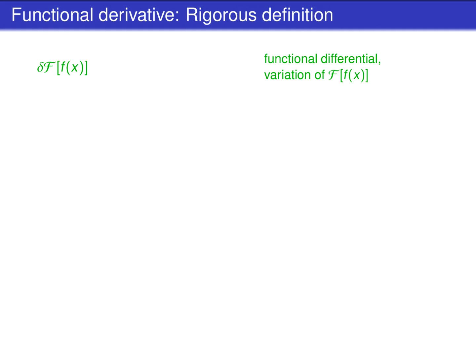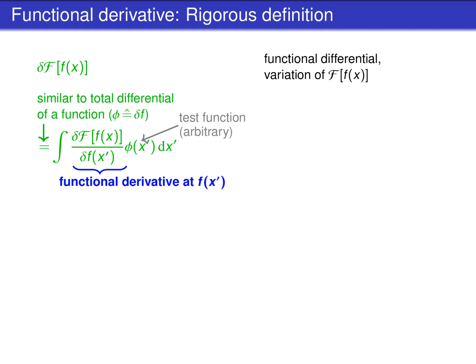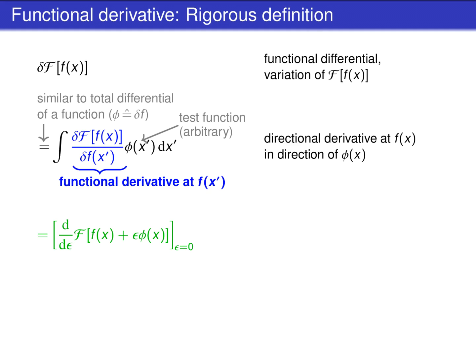In mathematics, one starts with the functional differential delta F. This is the variation of the functional F. This functional differential is defined as the integral over the product of the functional derivative of the functional F and a test function phi. Here we have the wanted functional derivative of the functional uppercase F. Since this functional derivative with respect to f of x' is a function of x', the integral over x' is reasonable. The test function phi is an arbitrary function, and can be understood as a variation delta f of x'. This interpretation helps to see that the functional differential is similar to a total differential of a function. The expression in the second line is the directional derivative of the functional at the function lowercase f of x' in the direction of phi of x.